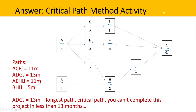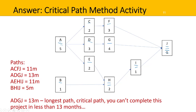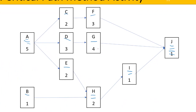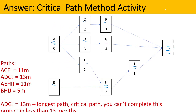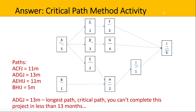The only way you might reduce the project time is if you can compress an activity on the critical path. For example, if you could do G in three months instead, that would make a difference to the overall project time frame. If you compressed F to one month, it would make no difference because F is not on the critical path. However, if you reduced the time frame of F and moved those resources onto G, that might help reduce G's duration, which would affect the critical path. So the critical path method helps us understand our time frame and gives us ideas for compressing the project.